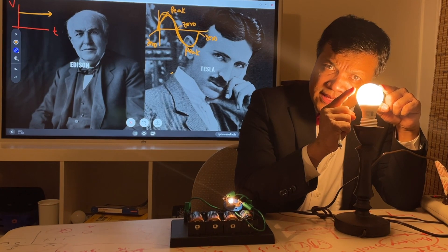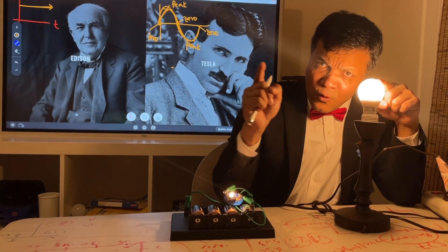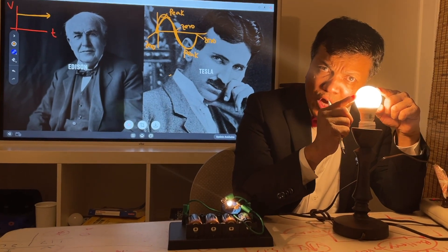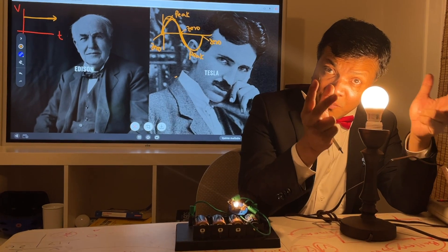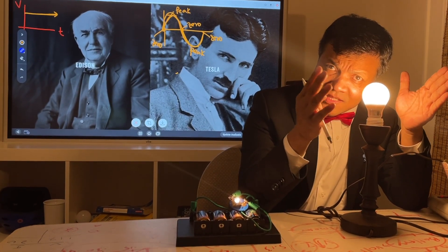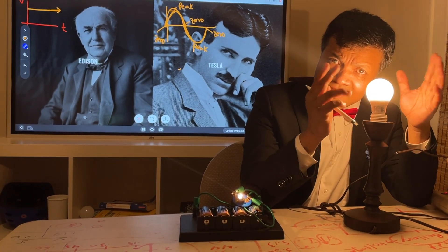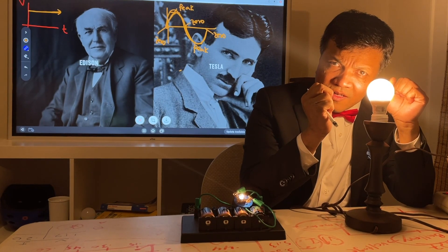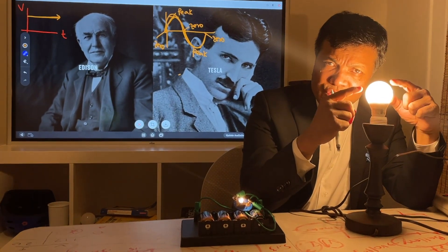That means AC current goes back and forth 120 times per second — so how many cycles are we talking about? We are talking about 60 cycles per second, which is 60 hertz. And 60 hertz corresponds to 120 voltage in the AC supply.